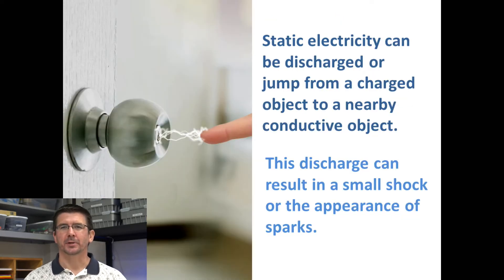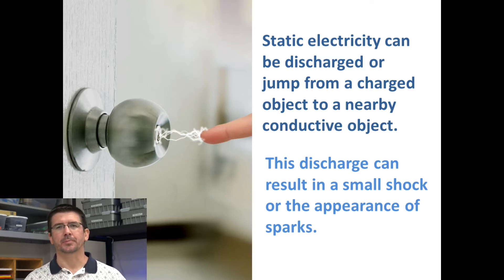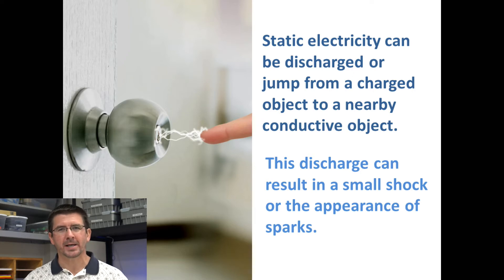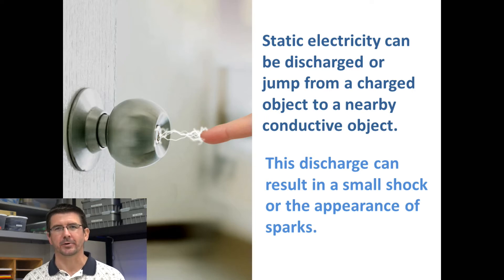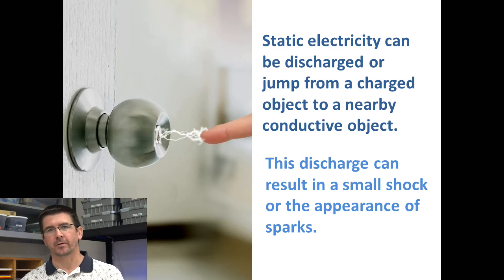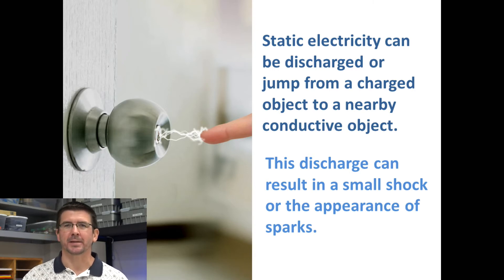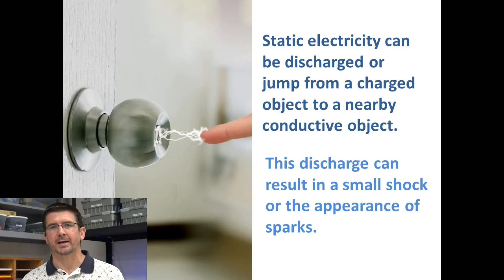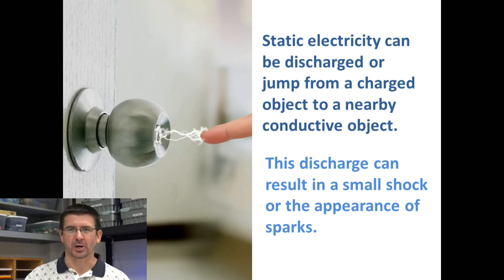One example of static electricity that most people can relate to is walking across a carpeted floor with socks on. As you move around, your feet and socks rub against the carpet. Then when you touch somebody or a door, you get that tiny little shock — it doesn't hurt you, but it gets your attention. That's actually the discharge of that static buildup. As you move around, you're gaining electrons from the carpet, giving your body a negative charge. As soon as you touch something conductive, that electrical charge flows out of you — you touch the doorknob, you get that shock. That's just those electrons flowing back out that you picked up by friction.